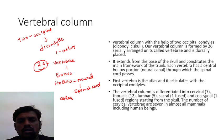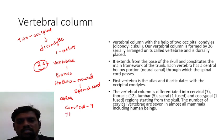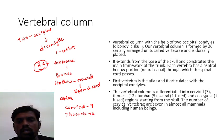There are cervical vertebrae present at the neck region — seven cervical vertebrae in total. At the chest region, thoracic vertebrae are present. There are 12 thoracic vertebrae present at the chest region.